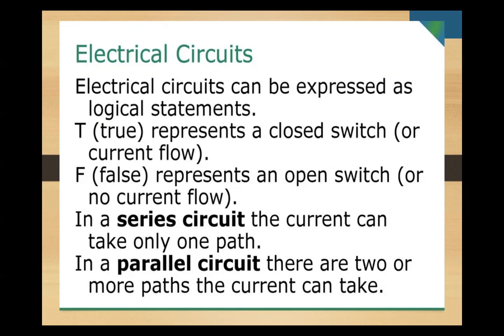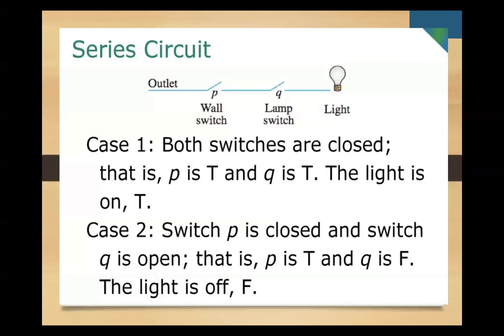So again, true is for closed and false is for open. We have two types: the series circuit and the parallel circuit. For the series circuit, the current can take only one path. For the parallel circuit, there are two or more paths the current can take. We have an illustration here of a series circuit with an outlet, a wall switch, a lamp switch, and a light.